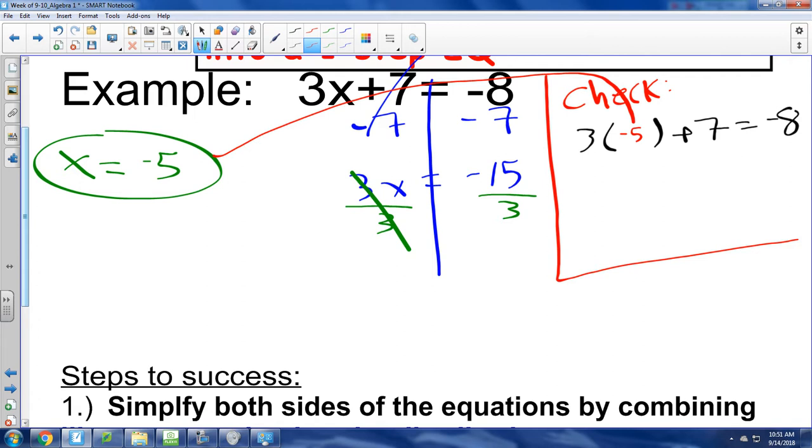Negative 15. So we have negative 15 plus seven and that's going to equal negative eight. Well, what's negative 15 plus seven? It's negative eight, right? So we have negative eight equals negative eight and we are correct. That's how we check our solution.